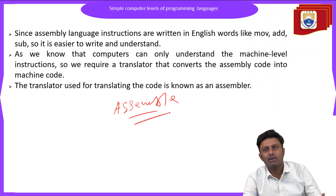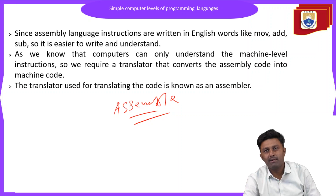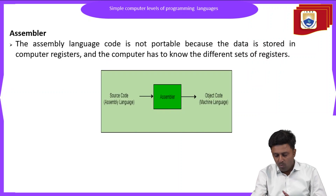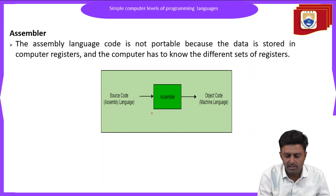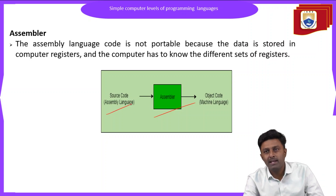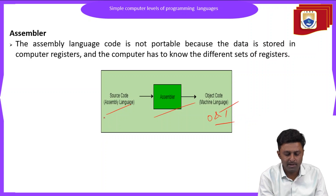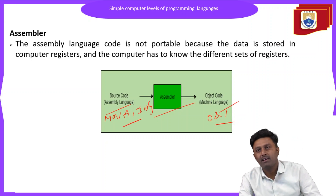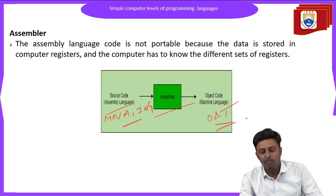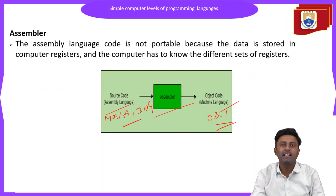In the assembly language, the code is written in English words, and after writing the code in assembly language we have to convert it into machine language because the computer understands only machine language. The assembler basically converts assembly language into machine language, that is machine code in terms of 0s and 1s. For example, an assembly language instruction like MOV A, #10 will be converted into machine language by the assembler.